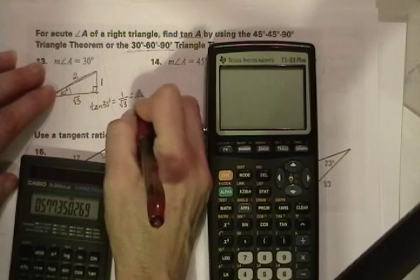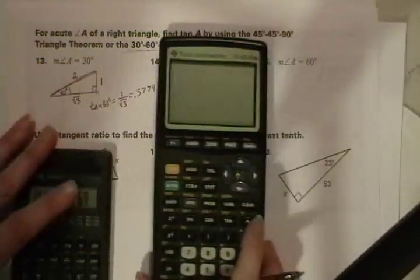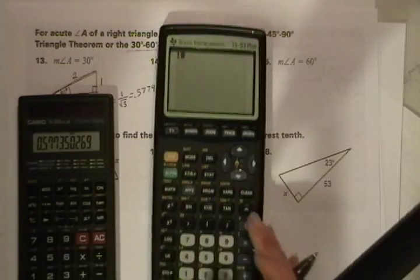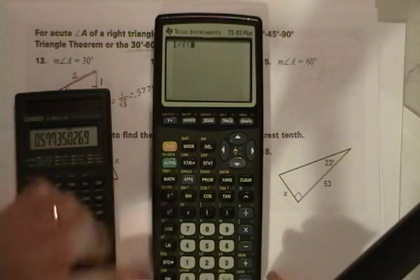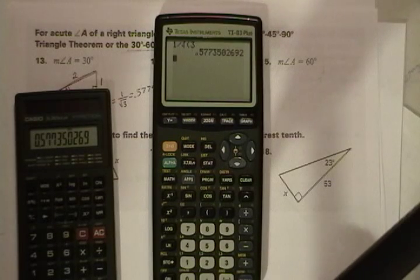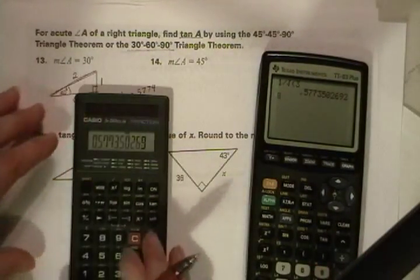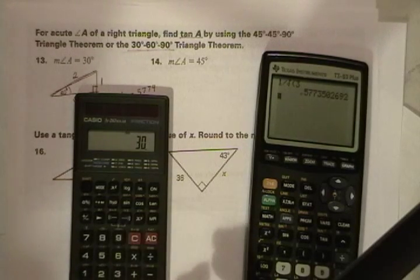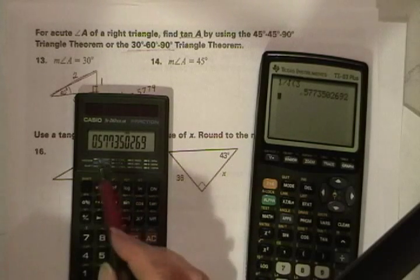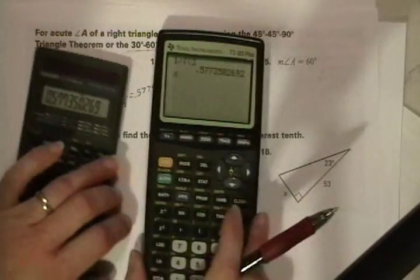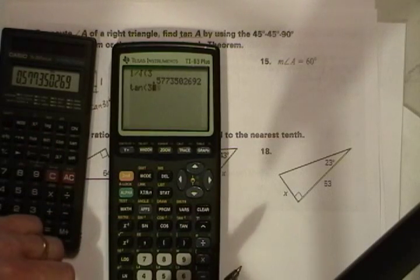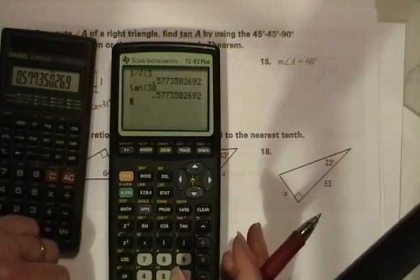Now, to use the Texas Instruments to do this, we will press 1 divided by second function, square root, 3, and press equals. And we have 0.57735 also. Now to show you that this really does work, we're going to put in tan 30 and compare our answers. On the Casio, you put in the 30 first, and then you put in tangent, and it gives you 0.57735. And over here, we're going to put tangent 30, enter 0.57734. So it works either way.